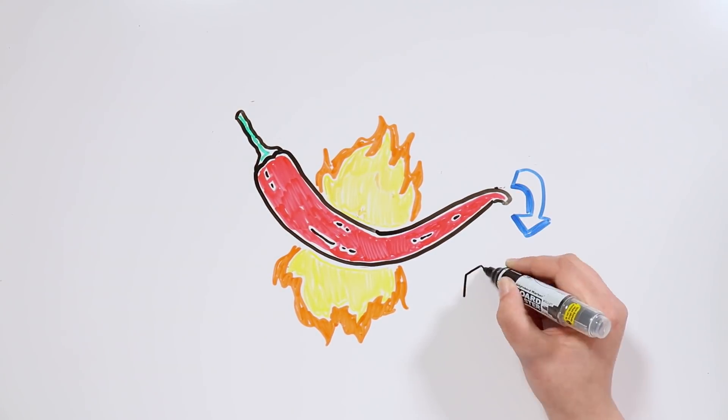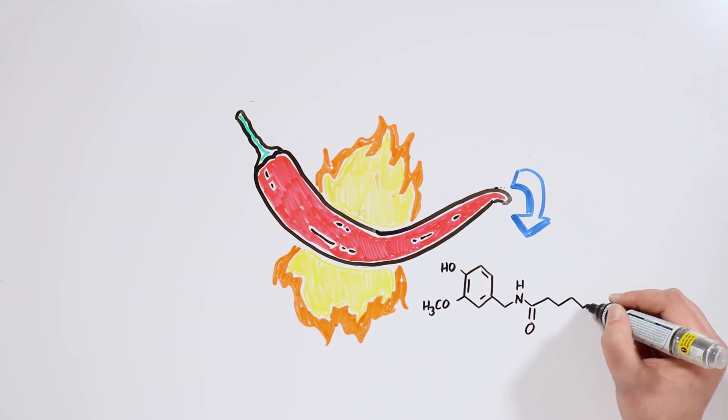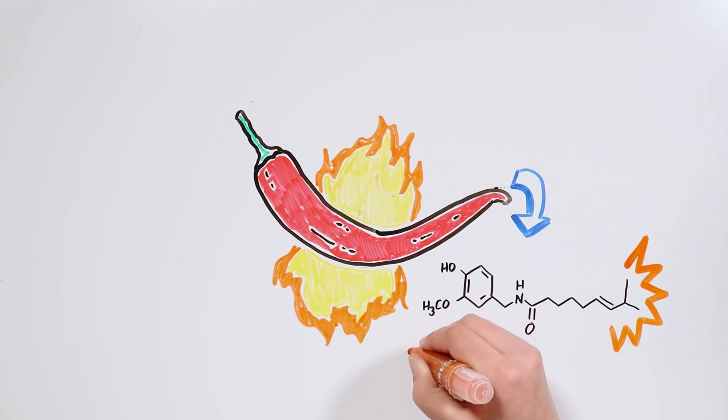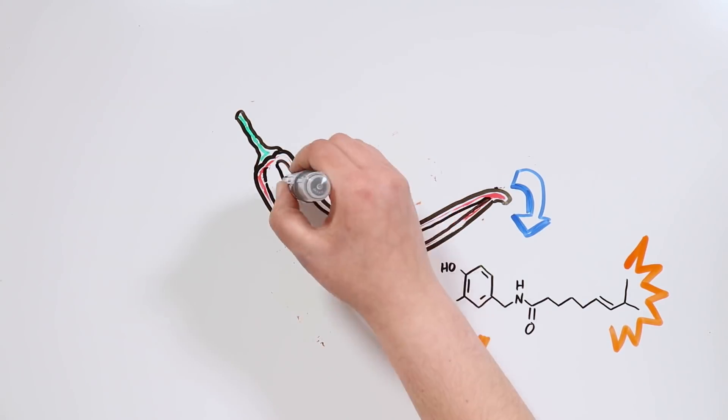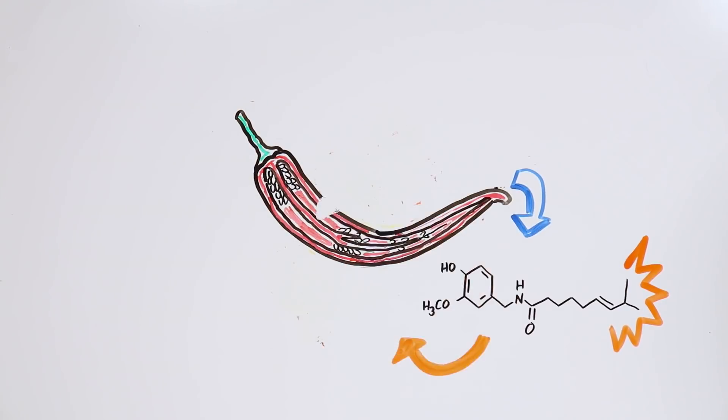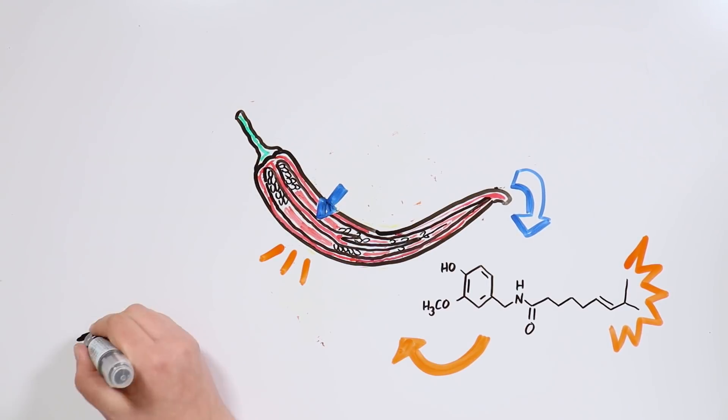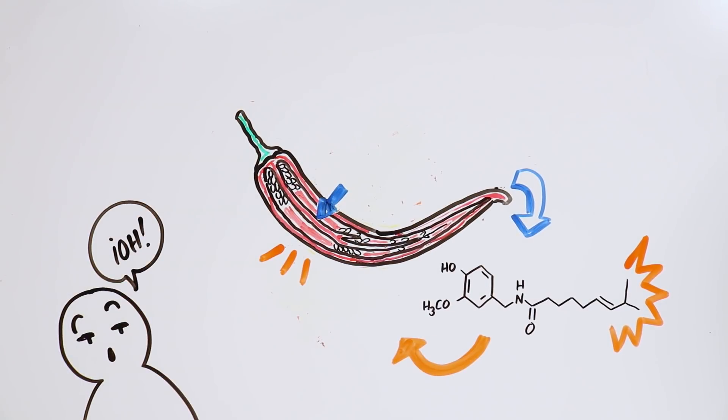Well, it's due to a chemical substance named capsaicin, which is produced by fruits such as this one. The substance is present mostly in its placenta, popularly known as the veins of the chili, and not in its seed as many people believe.